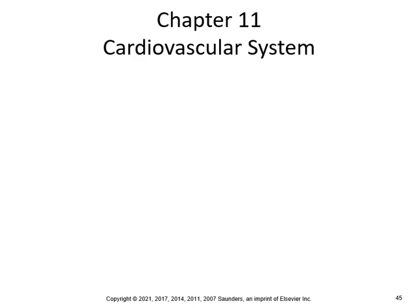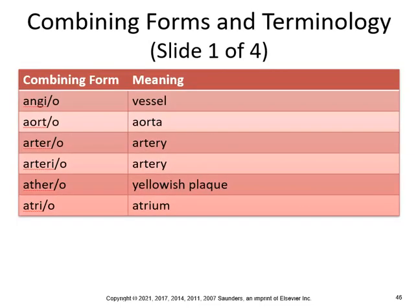Let's continue with chapter 11. We're going to talk about the terms: angio meaning vessel, aorta, artery, ather meaning yellowish plaque, and atri as in atrium. So angio — like an angiogram — would be to record, like an x-ray of a blood vessel.